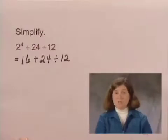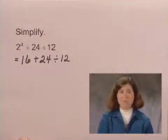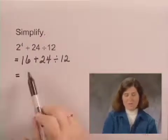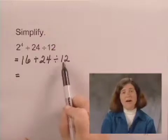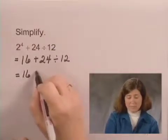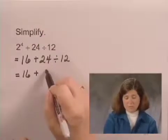There are no exponential expressions left, so the next step is to perform all multiplications and divisions in order from left to right. The division that we see is 24 divided by 12. So I will copy 16 plus and then perform the division, 24 divided by 12 is 2.